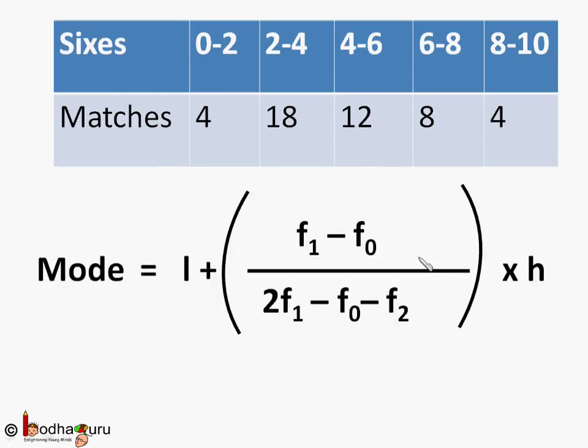The formula for finding mode of grouped data is like this. Mode is equal to L plus F1 minus F0 by 2 times F1 minus F0 minus F2 whole bracket into H.